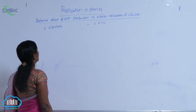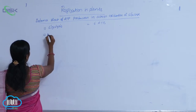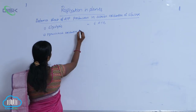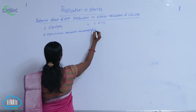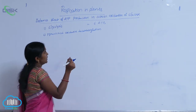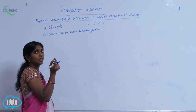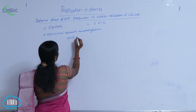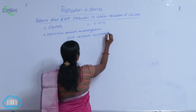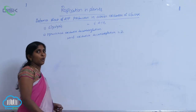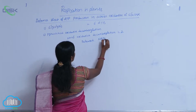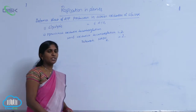6 ATPs are released. Coming to the next step — pyruvic acid. Oxidative decarboxylation. For one glucose molecule, how many oxidative decarboxylation reactions are carried out? 2. So the number of oxidative decarboxylations are 2. How many NADH₂s are released? 2 NADH₂s are released.